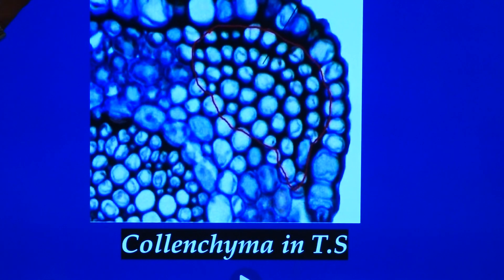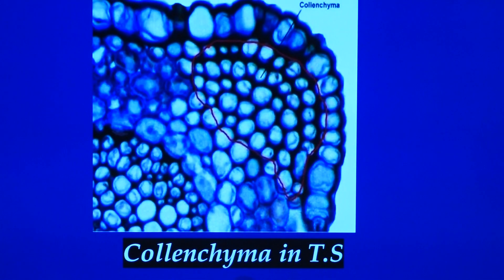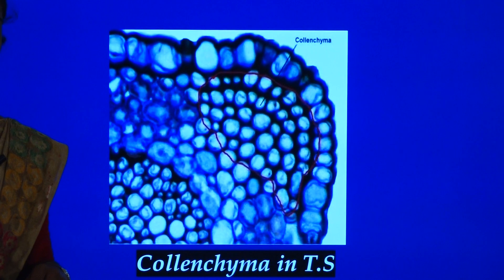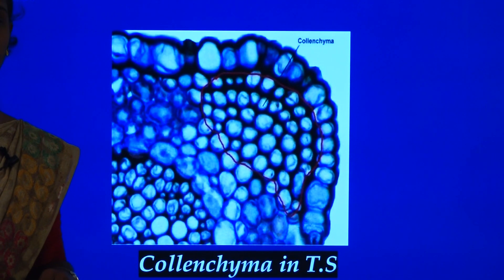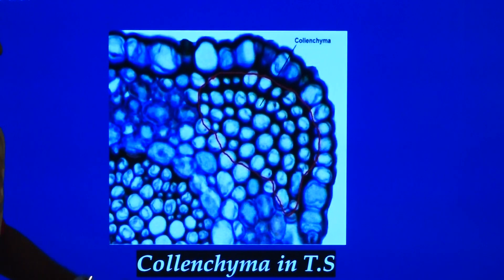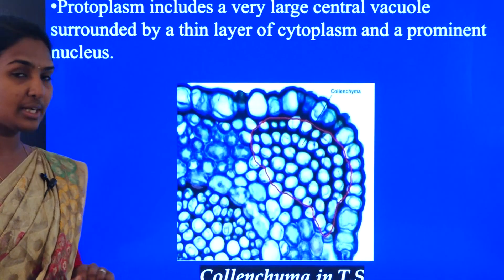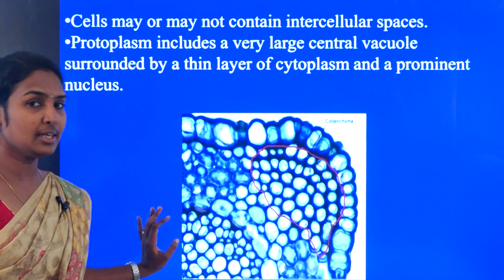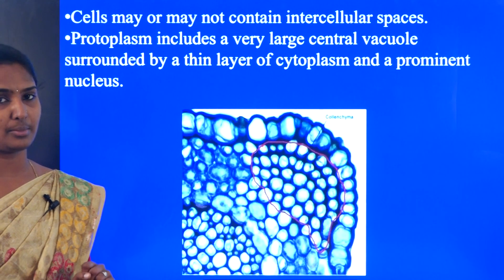The protoplasm includes a very large central vacuole surrounded by a thin layer of cytoplasm and a prominent nucleus. So here also there will be one vacuole — that cavity will be there. At the side we see one prominent nucleus along with the protoplasm. This is the microscopic view of the collenchyma cells. This is about the second type, that is collenchyma tissue.